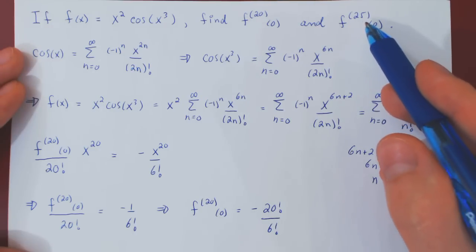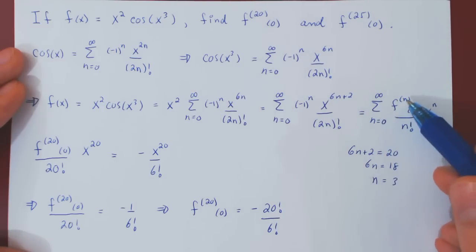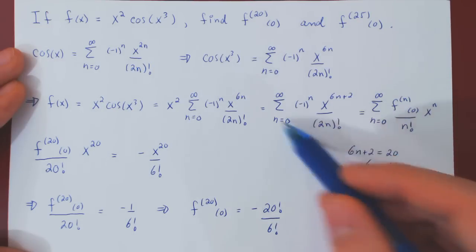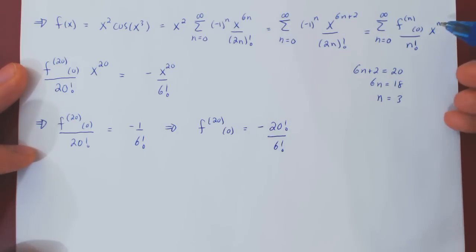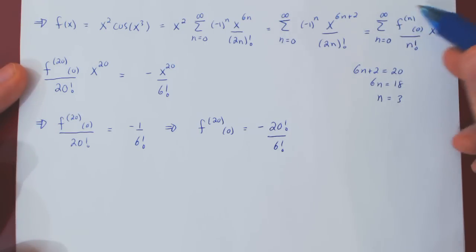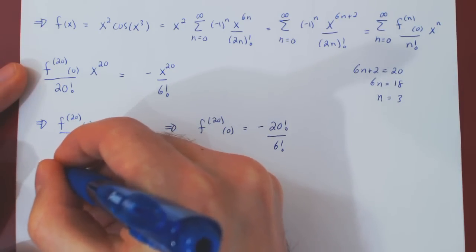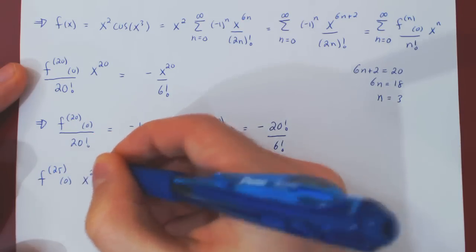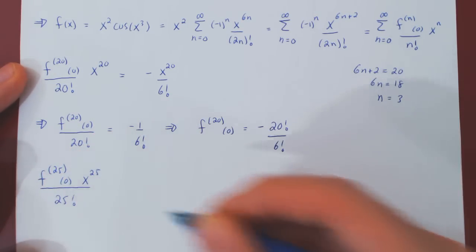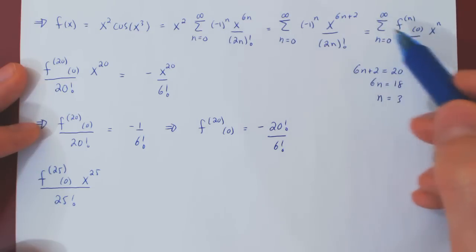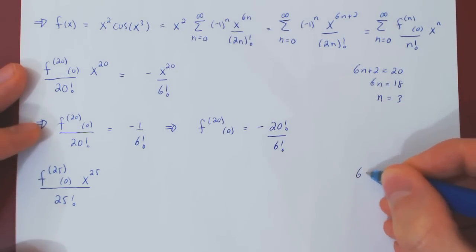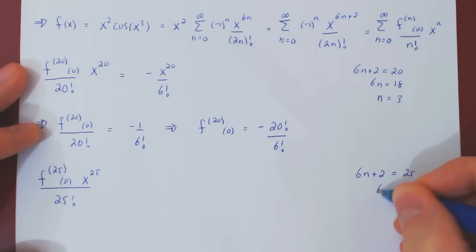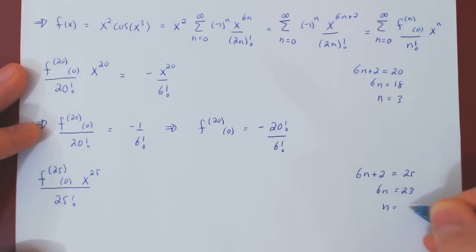We can apply the same technique to the 25th derivative, since every higher derivative of f at 0 is encoded in the Maclaurin series of f of x. The 25th derivative at 0 comes from the power x to the 25. From the general formula, we have the 25th derivative of f at 0 times x to the 25 over 25 factorial. From our specific Maclaurin series, we ask: when will we have x to the 25? That requires 6n plus 2 equals 25, so 6n equals 23, giving n equals 23 over 6.